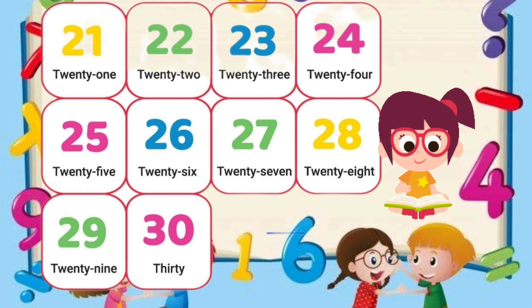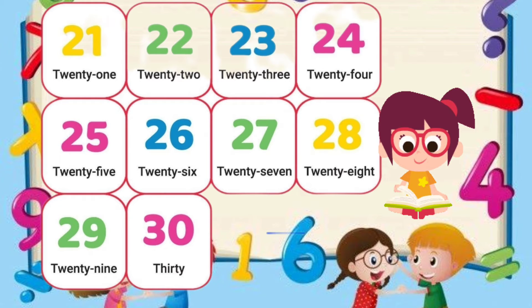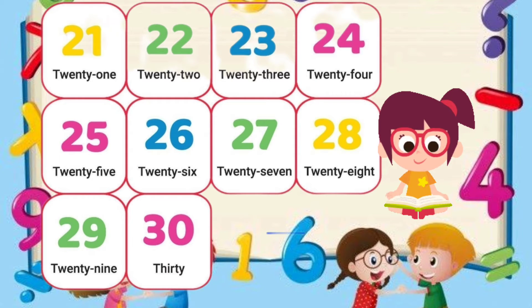27 — T-W-E-N-T-Y S-E-V-E-N. 27. 28 — T-W-E-N-T-Y E-I-G-H-T. 28. 29 — T-W-E-N-T-Y N-I-N-E. 29. 30 — T-H-I-R-T-Y. 30.